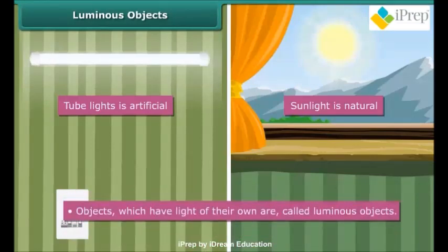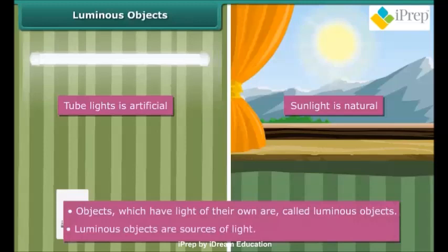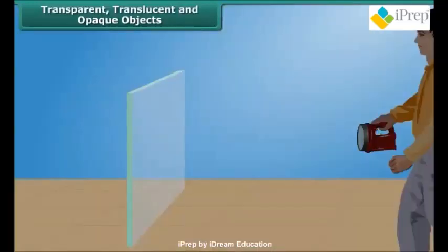Objects that have light of their own are called luminous objects. In our example, both the sun and tube lights are luminous objects. The sun is a natural luminous object and tube lights are artificial man-made luminous objects. Luminous objects are sources of light.